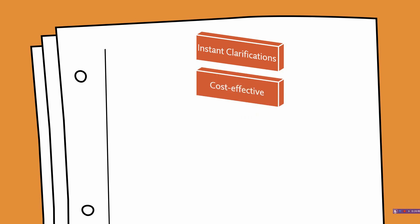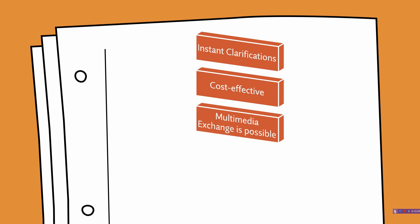Next is cost effective. Email is very cost effective and cheaper than postal mail. The cost of sending a message is the same whether it is being sent within the same building or across the world — whether you send it to someone in another country or someone a few meters away, the cost is the same and does not change with distance. This is not the case with postal mail. Next, multimedia exchange is possible: it is possible to exchange information in the form of multimedia messages through emails such as sounds, images, videos, and applications.